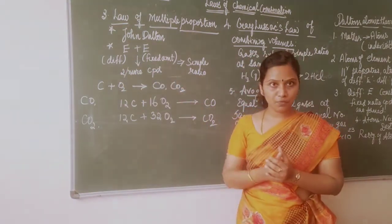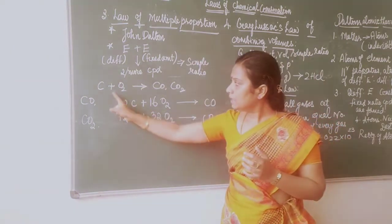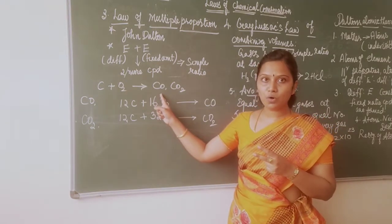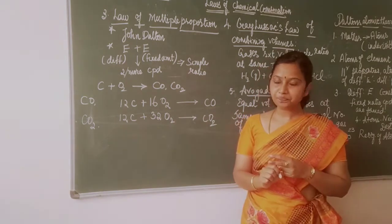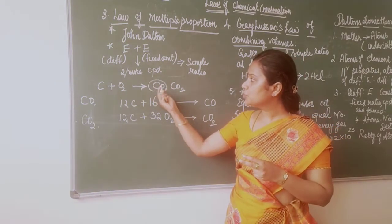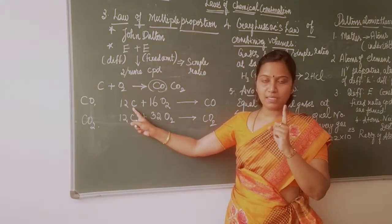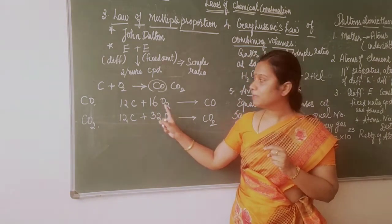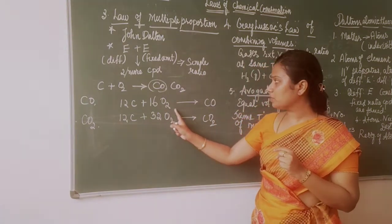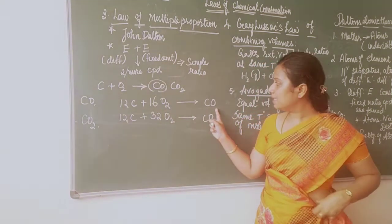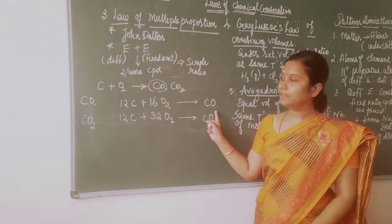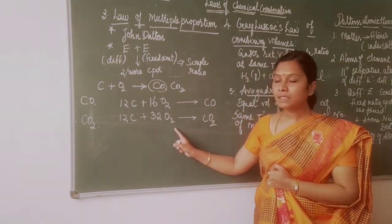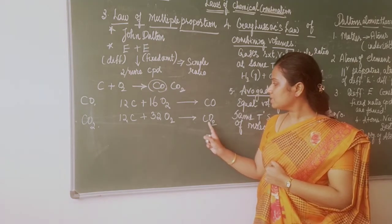An example for the law of multiple proportion: carbon combines with oxygen to give two compounds — carbon monoxide or carbon dioxide. For carbon monoxide, 12 parts of carbon combine with 16 parts of oxygen. For carbon dioxide, 12 parts of carbon combine with 32 parts of oxygen, giving the product carbon dioxide.